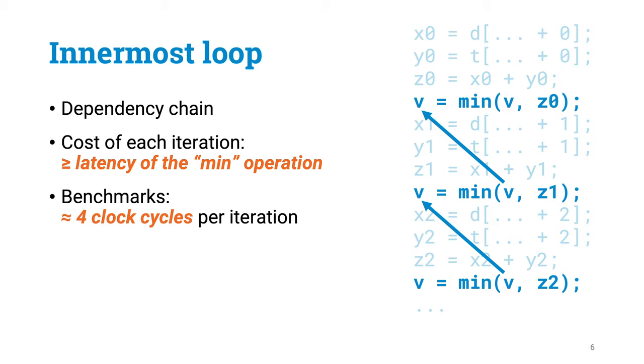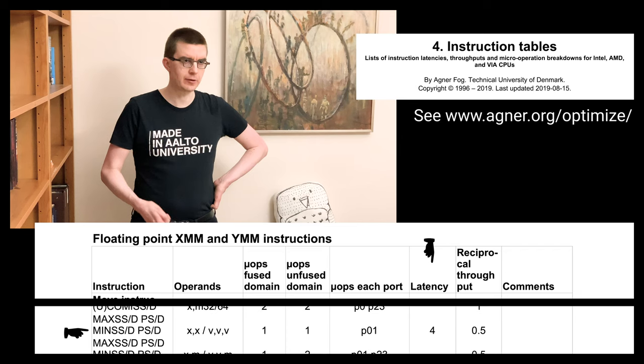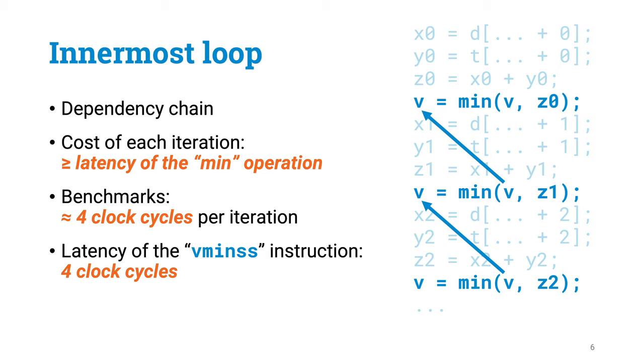So even if our program only contained these minimum operations and nothing else, the running time of one iteration of the innermost loop is at least the latency of one minimum operation. Is this really the bottleneck? Let's benchmark and check the CPU specifications. Benchmarking shows that one iteration of the innermost loop takes roughly four clock cycles. Each minimum operation compiles to the machine instruction vminss. Looking at the manual, the latency of vminss on this CPU is exactly four clock cycles. So eliminating all memory reads and additions from the innermost loop would not improve performance unless we address these inherently sequential minimum operations.